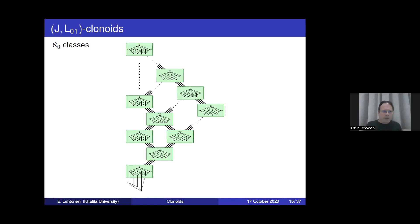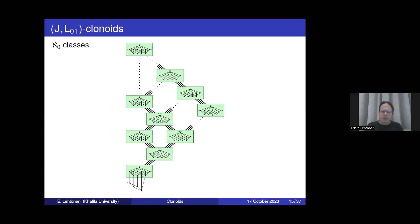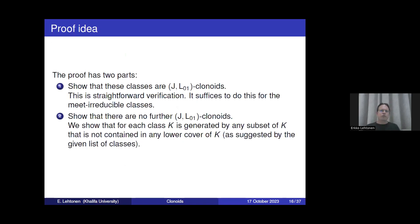Of course, we should prove that these are indeed all the classes, and the proof has two parts. First, we show that all these classes are clonoids — this is mainly a straightforward verification, sufficient to verify for the base classes we defined, because everything else in the diagram is obtained as intersections of those classes, and intersections of clonoids are again clonoids. The second, more difficult part is to show that there are no further clonoids beyond those given here.